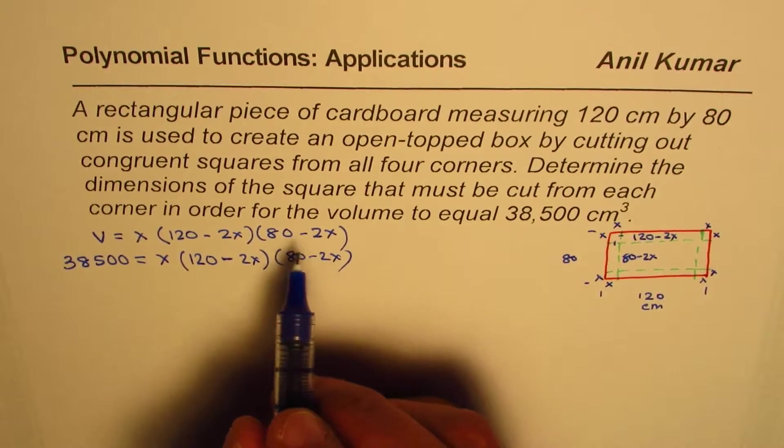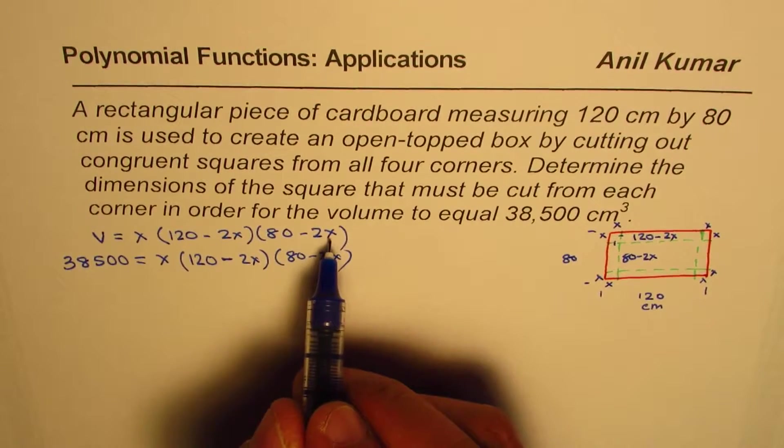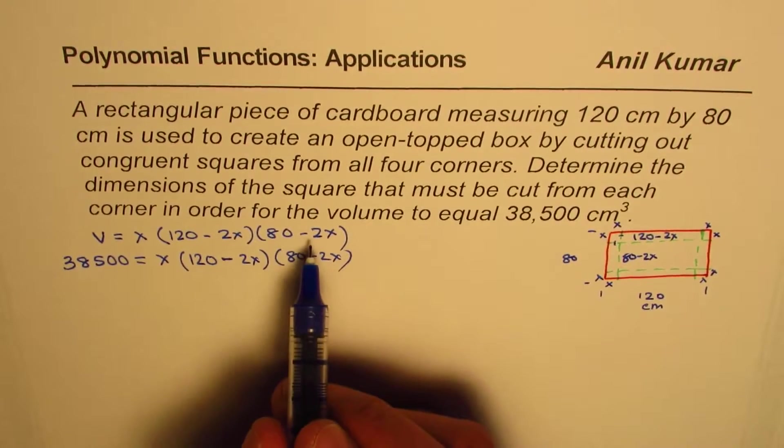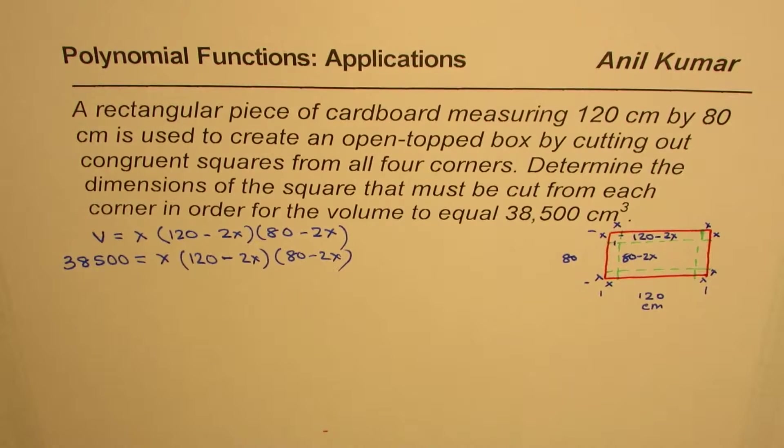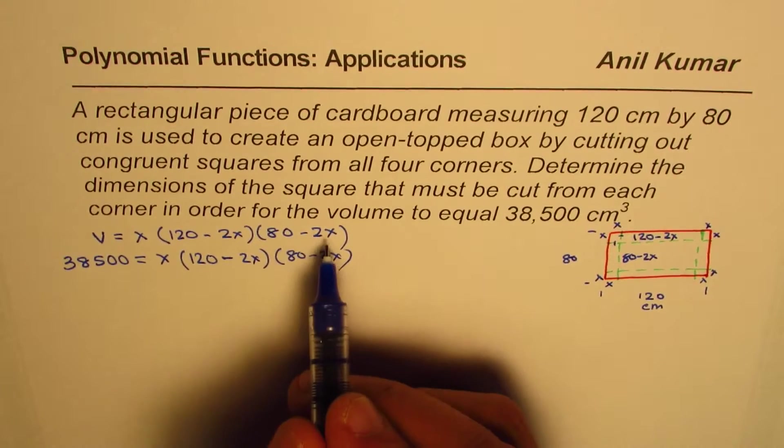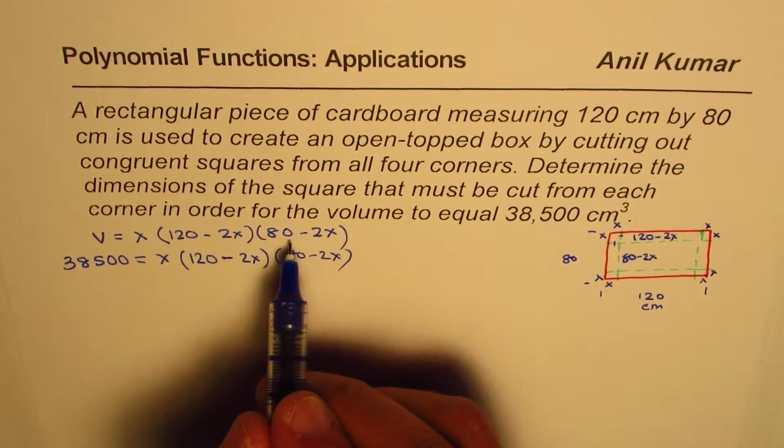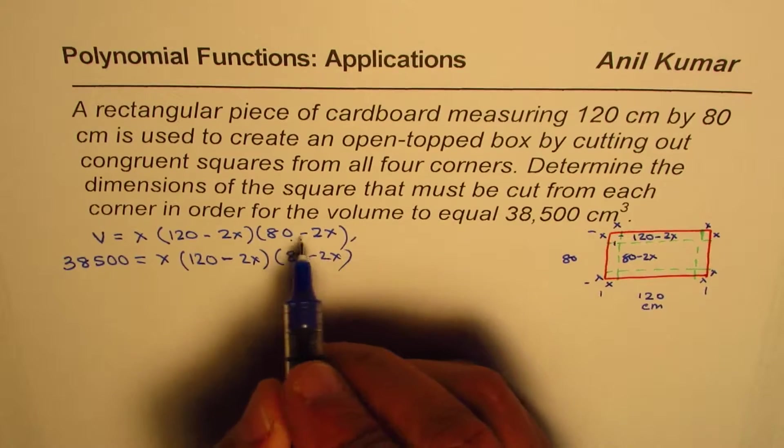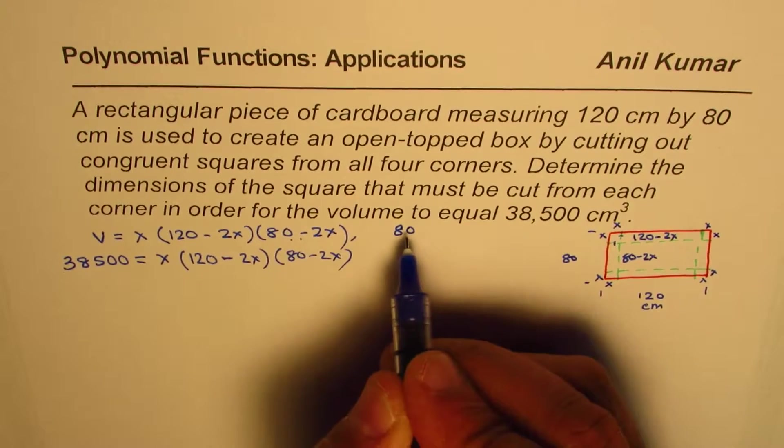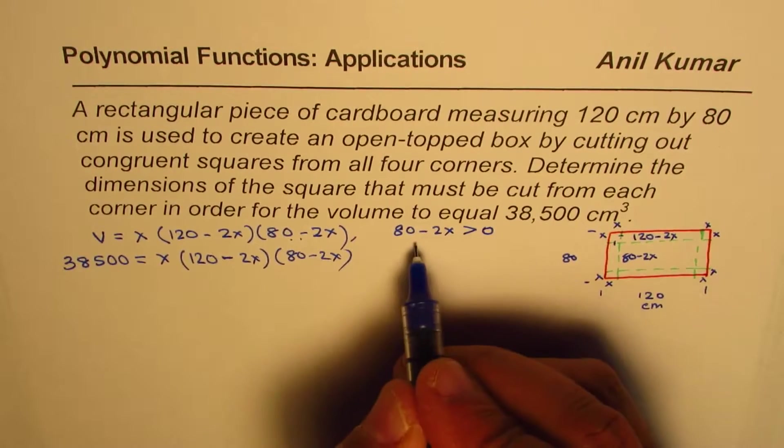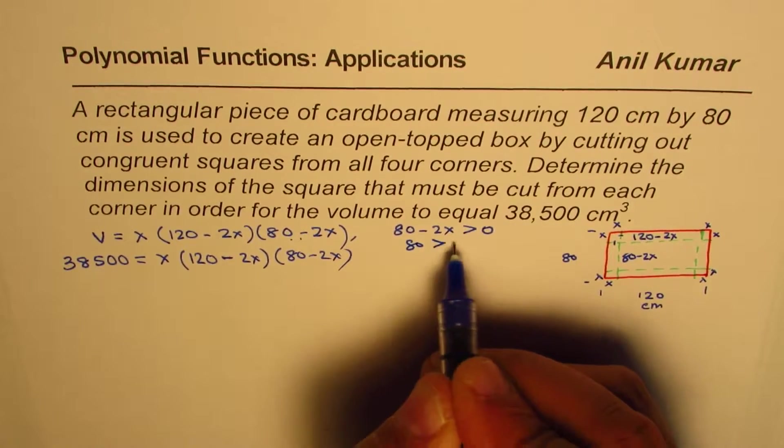Now, important thing to consider here is: what could be the value of X? Since the dimensions are always positive, we can see from here that X should be from 0 to 40. X cannot be more than 40, otherwise this quantity will be negative.